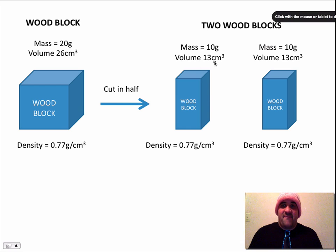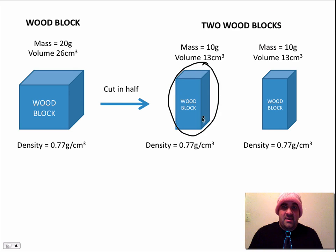Again, dividing mass by volume leaves us with the same result. Both of these wood blocks are going to have the same density. This is 0.77, the same thing as this whole one.